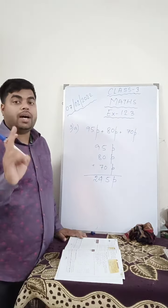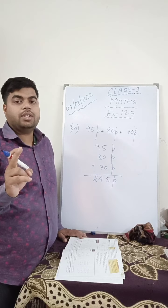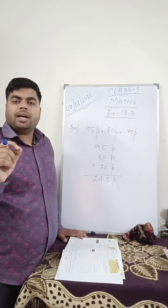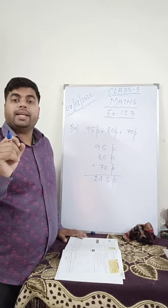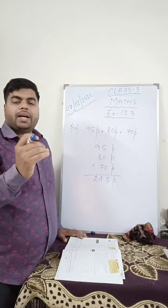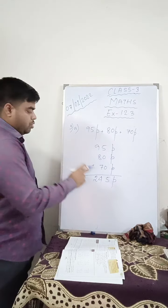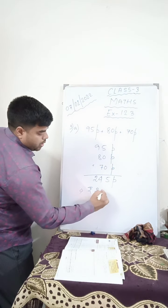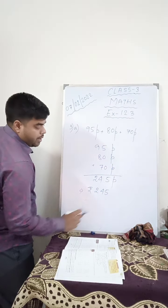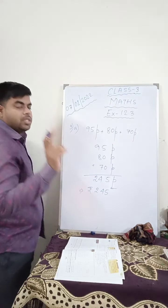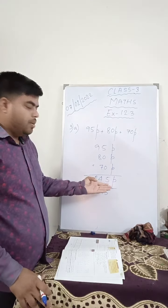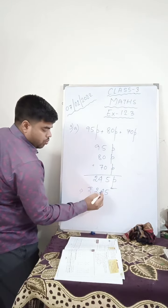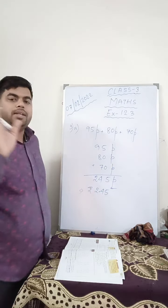Whatever the answer comes, just put a decimal counting from the back before 2 digits. Put the symbol rupees 245, and from the back, count 2 digits because we have to divide paisa by hundred to get rupees. From the back, this answer is over.